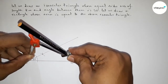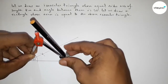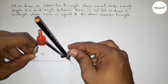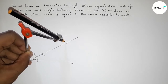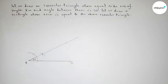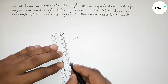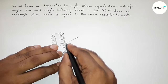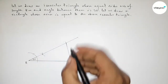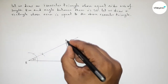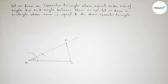Now taking 8 centimeters by using compass and cutting here. Now we have to join this line and taking point A here. So this is an isosceles triangle with equal sides of 8 centimeters and angle 30 degrees.